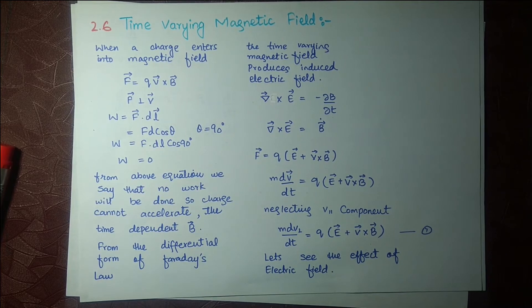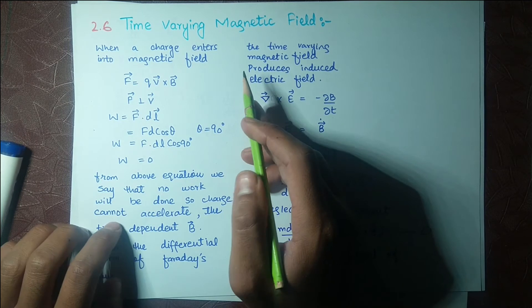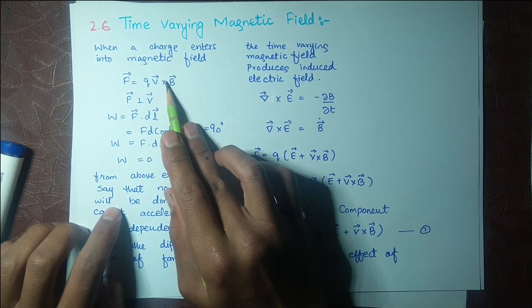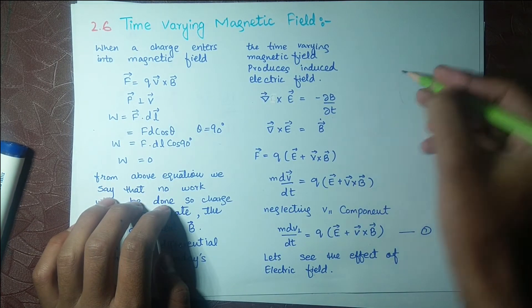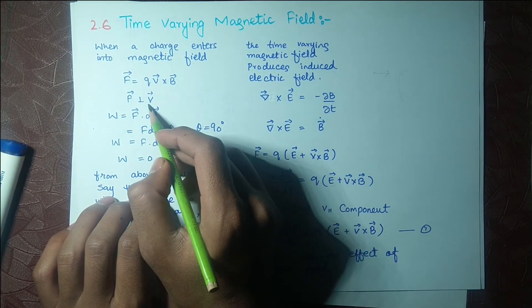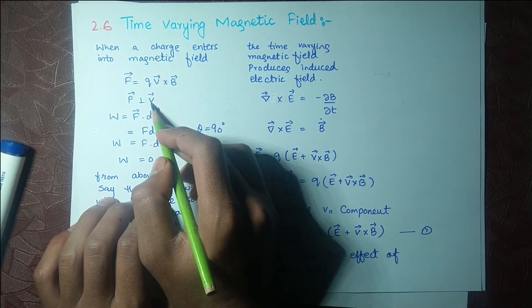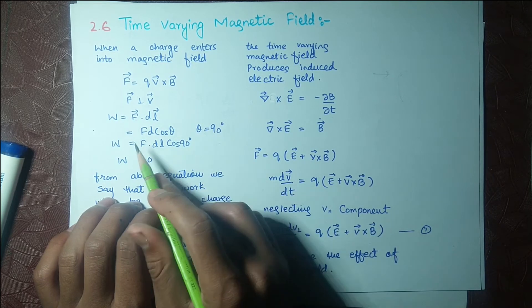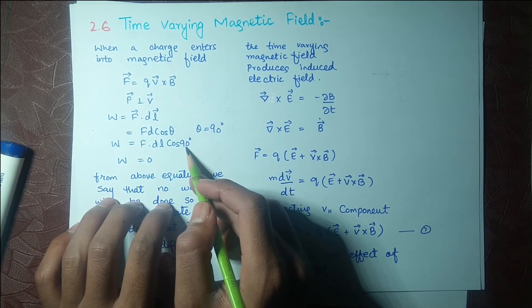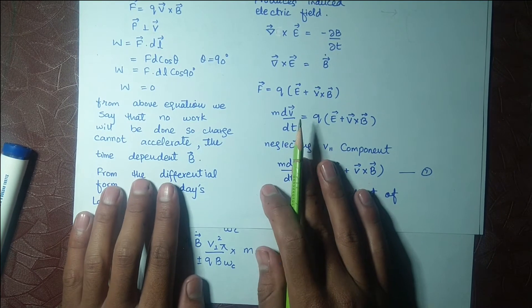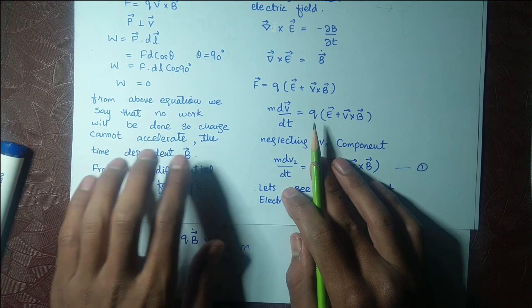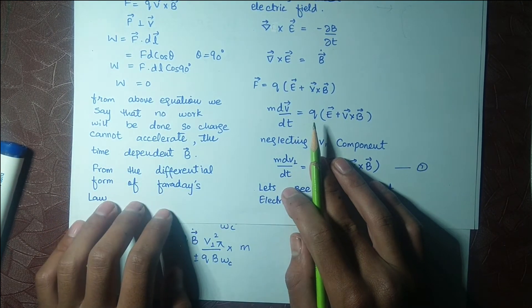When a charge enters the magnetic field, the charge experiences a force. When it circles and moves in a circle, the direction of the magnetic field means the velocity is always perpendicular to the force, which means the displacement vector is perpendicular to the force. Therefore theta equals 90 degrees, W equals F dot dl times cos(90°), and cos(90°) equals zero. So W equals zero — no work will be done.